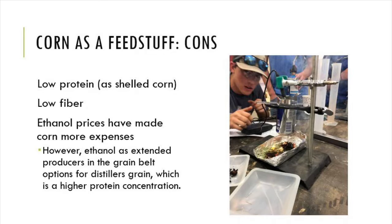Every rose does have its thorn, and corn is not immune to this. Shelled corn is low in protein and low in fiber, which are some elements that we do need in a balanced livestock ration. Corn itself cannot be the sole feedstock for any livestock. However, you can get higher protein levels of corn through some different byproducts of corn processing. Ethanol prices have also made corn as a commodity more expensive per bushel. However, it should be noted that ethanol as a product has extended the use of distiller's grain throughout the grain belt, which is a higher protein concentrated feed.